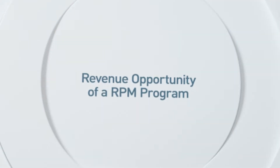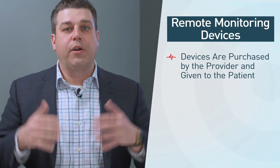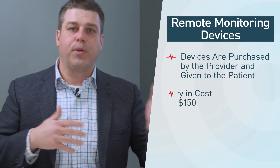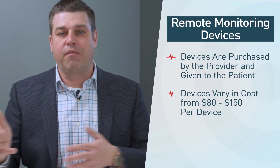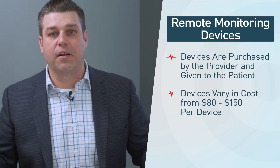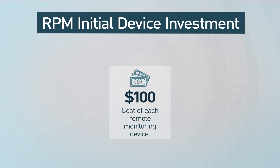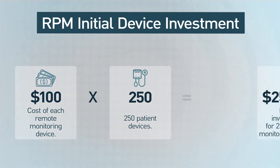Let's start by looking at the revenue opportunity for RPM. With this ROI example, we're going to look at setting up the program and implementing it for the first year. In this example, we'll be managing 250 RPM patients each month. First, we'll need to purchase RPM devices for your patients. When you're purchasing an RPM device, there are many different costs depending on the device — whether it's Bluetooth or cellular — we see prices anywhere from $80 to $150. For this example, we'll use 250 patients at $100 per device, which comes out to about $25,000.